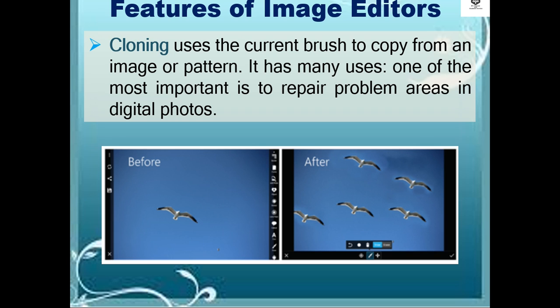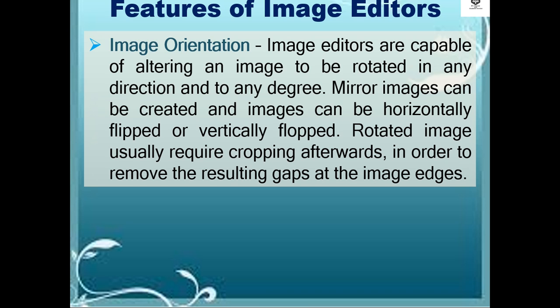Cloning uses the current brush to copy from an image or pattern. It has many uses, one of the most important being to repair problem areas in digital photos. Image orientation allows image editors to rotate an image in any direction and to any degree. Mirror images can be created, and images can be horizontally or vertically flipped. Rotated images usually require cropping afterwards to remove the resulting gaps at the image edges.